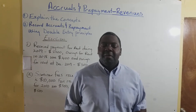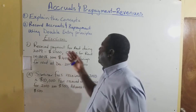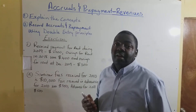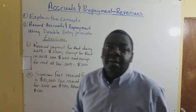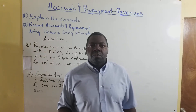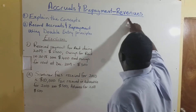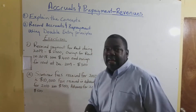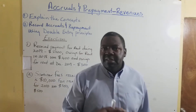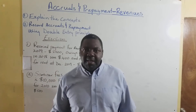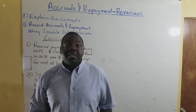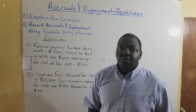Welcome back as we continue the process of explaining the use of accruals and prepayment adjusting in the final accounts. In our last lesson, we had looked at expenses — how do we treat accruals and prepayments in relation to expenses? And now we want to look at accruals and prepayments in relation to revenues. It is very important that we look at this as we had already indicated we would.